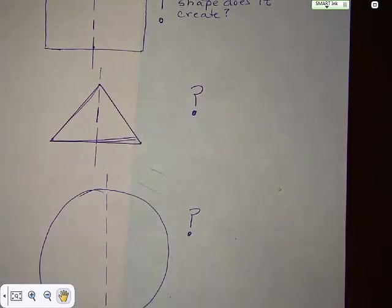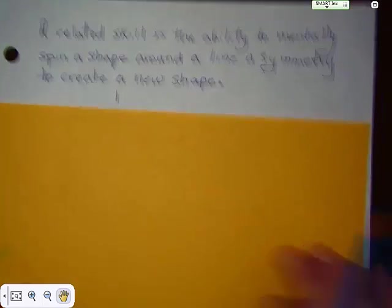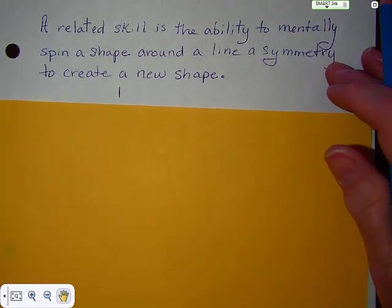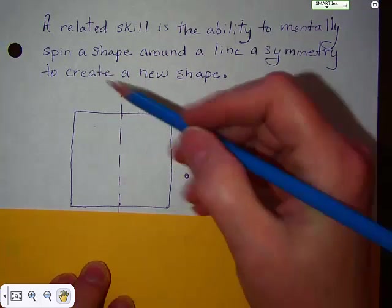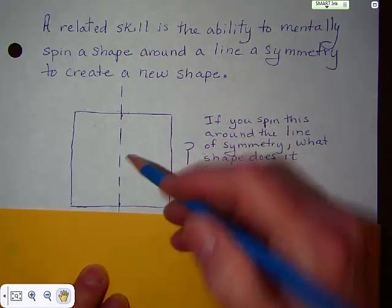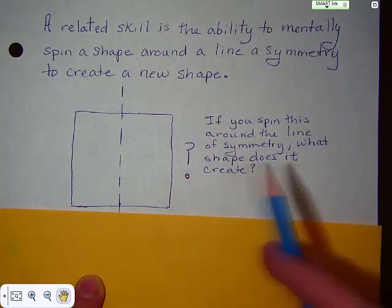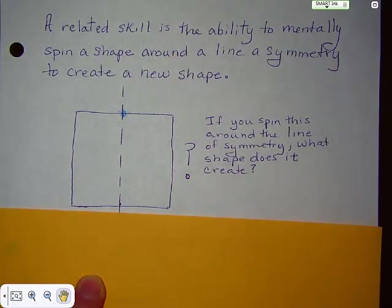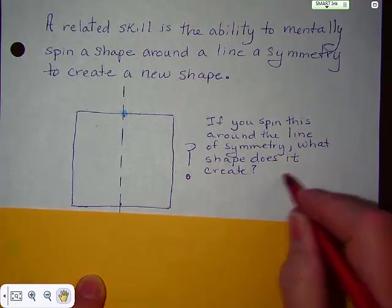Now, there's another exercise that I'd like to see us do when it comes to polyhedrons. And that is to be able to mentally spin a shape around a line of symmetry and create a new shape. So, if you hook a square like this, put a line of symmetry down the middle, and then mentally spin it around. Spin it, spin it, spin it. This is going to be the center.